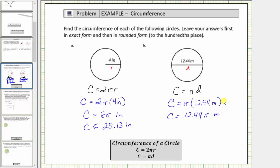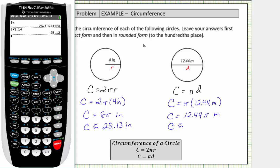And now we'll go back to the calculator and get our decimal approximation for the circumference. And again, we will compare the values using the π button versus using 3.14. Using the π button, we'd have 12.44 times π, enter, which would be approximately 39.08 meters.